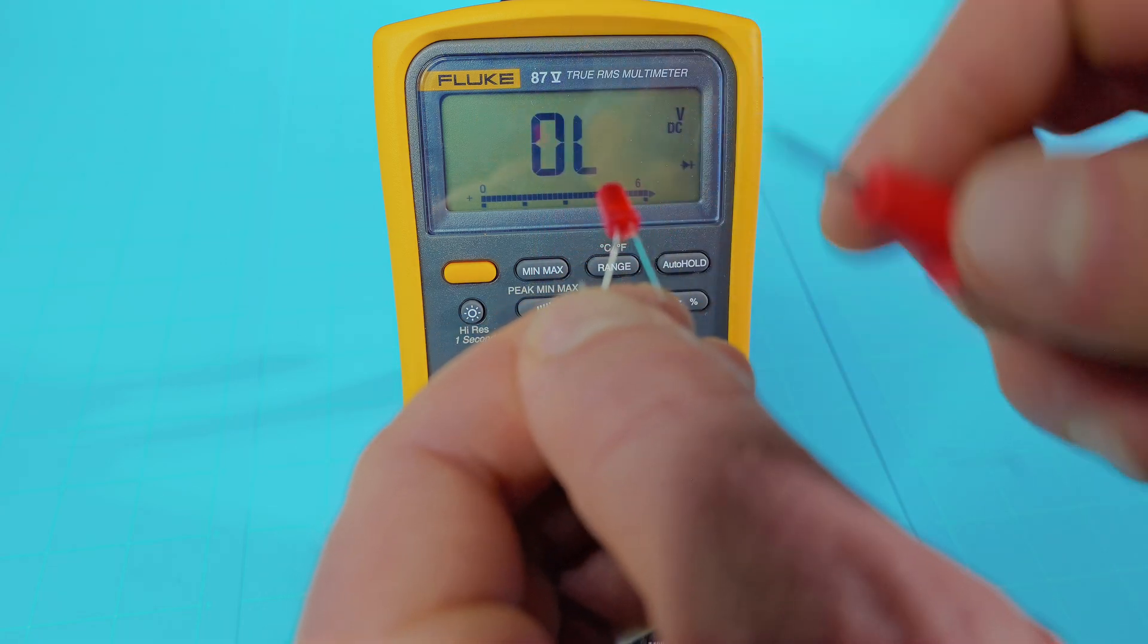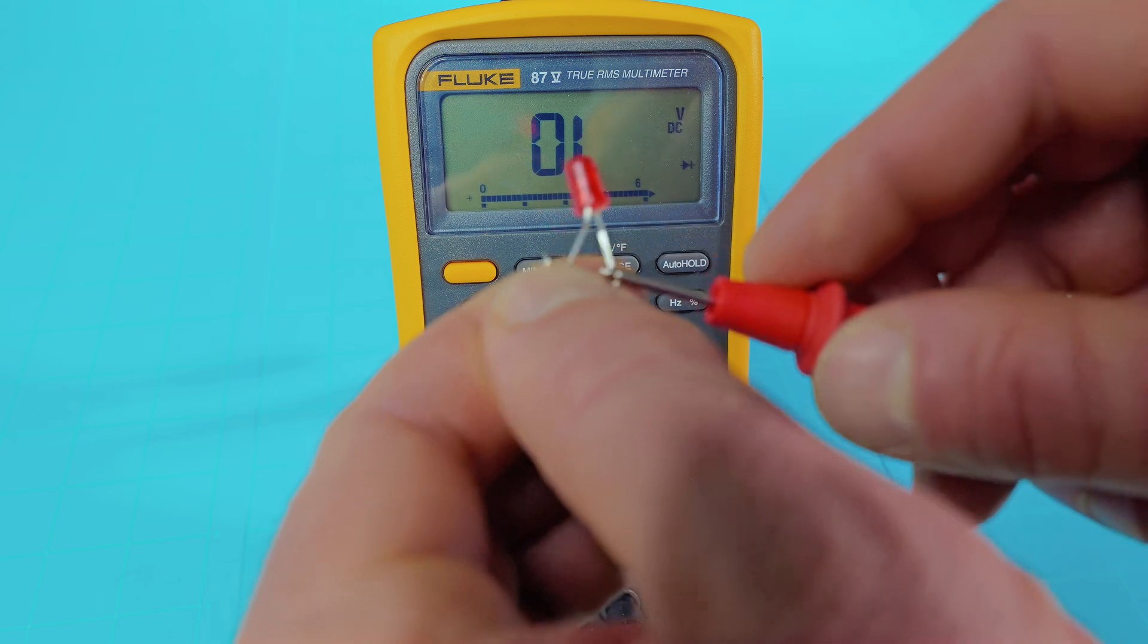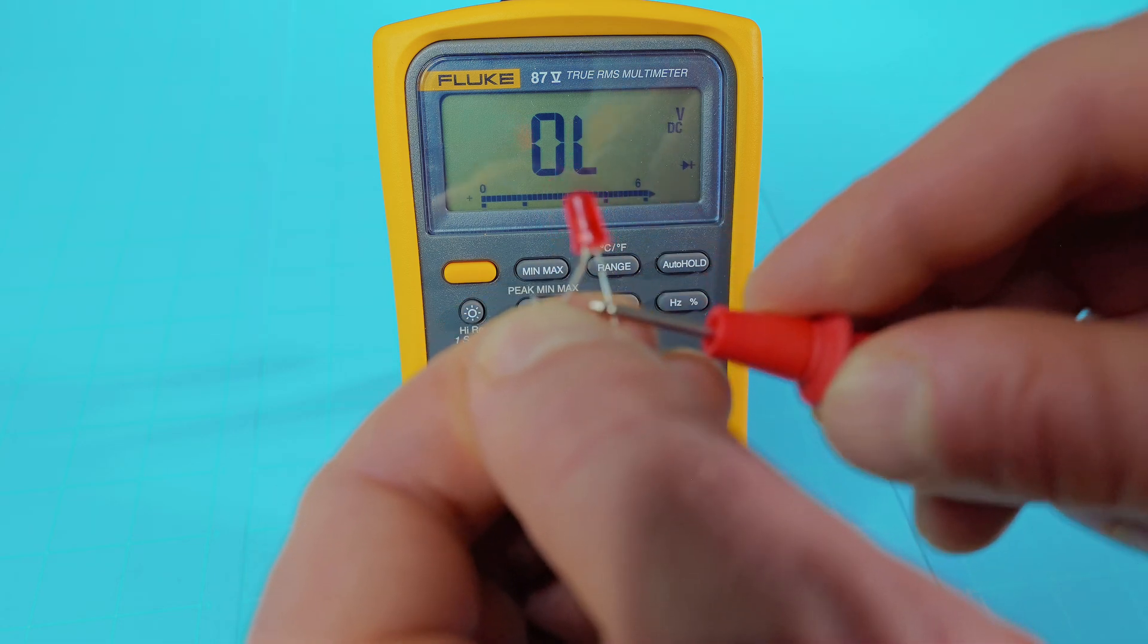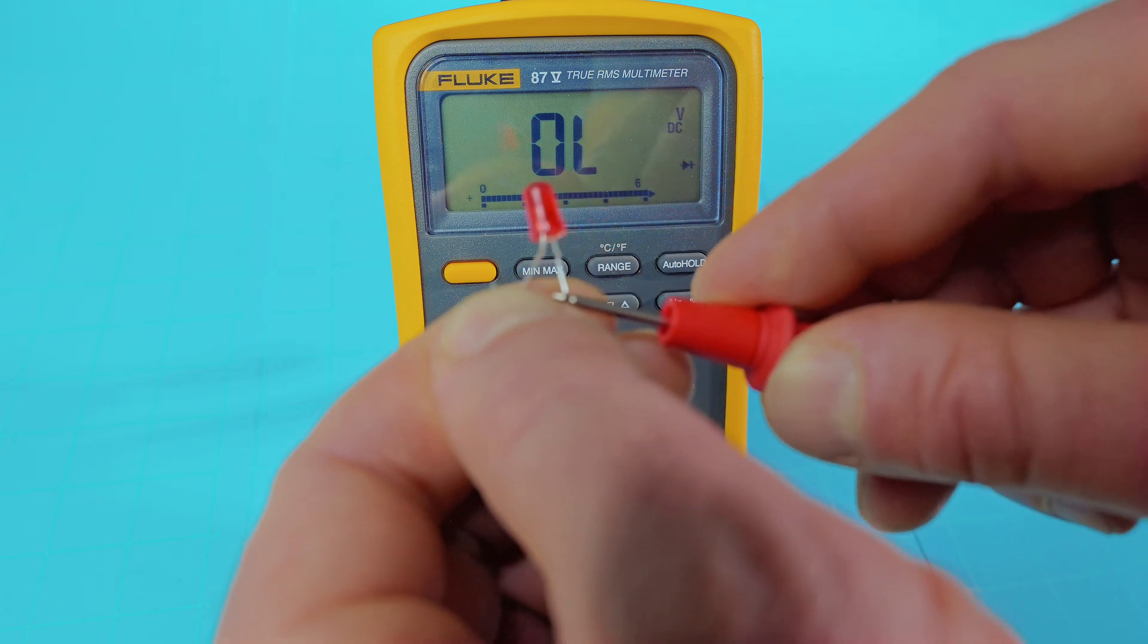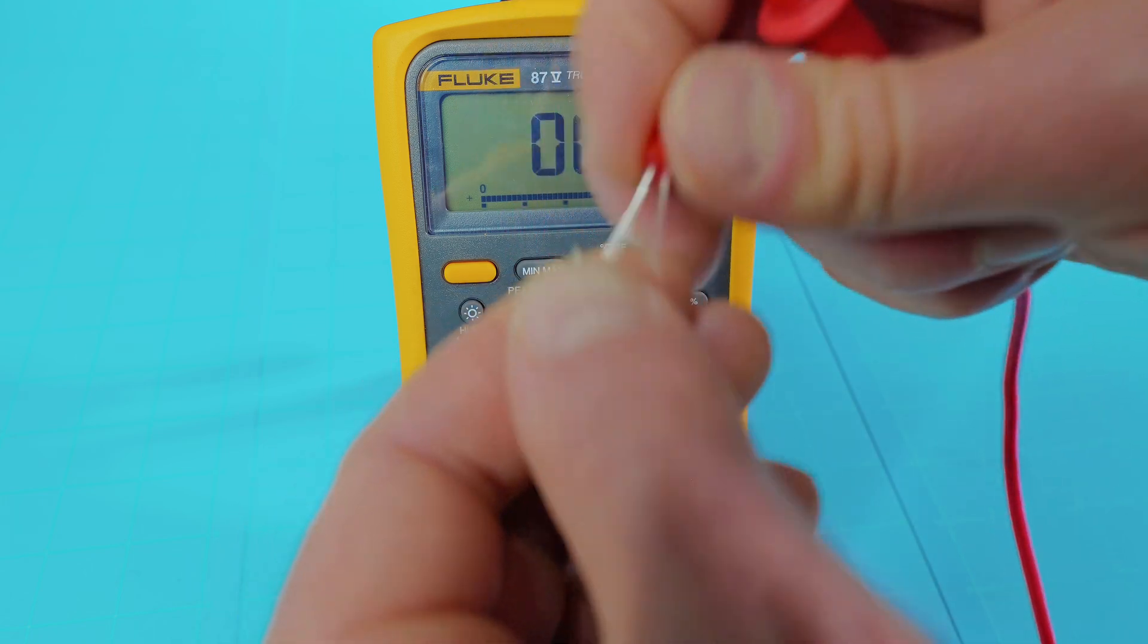Now, if you were to flip it around and have it backwards with the longest lead on the black and the shorter on the red, it's actually not going to do anything. So if you're getting the OL both directions, then your LED is bad.